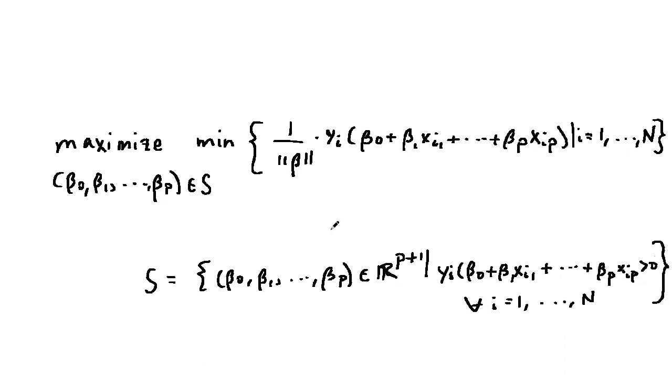So we have the following problem. Maximize this expression here. This is the margin, where beta 0, beta 1 through beta p lies in s, and s is this set,